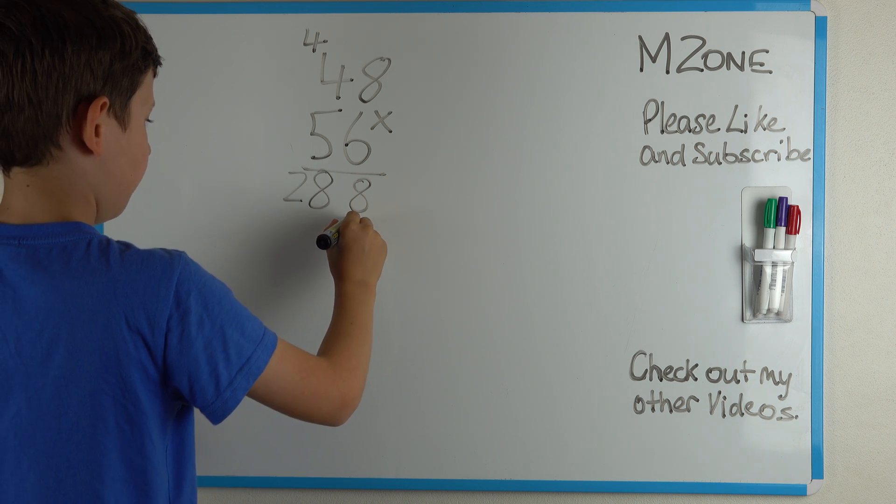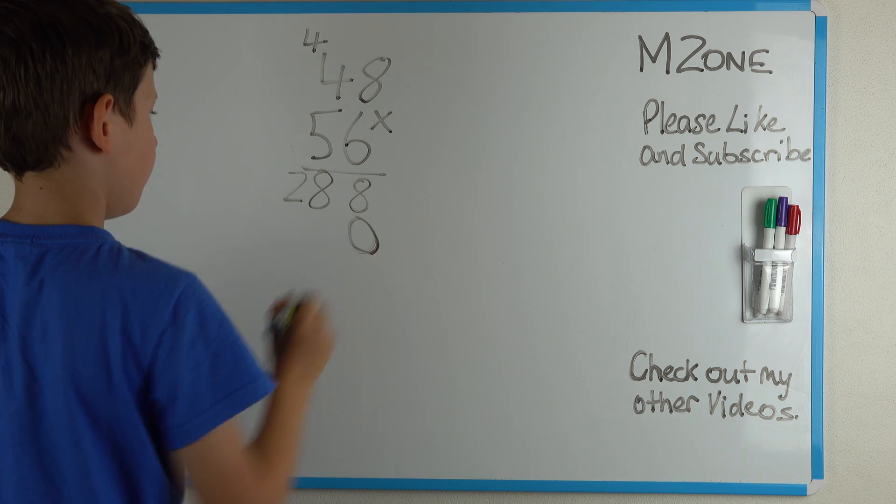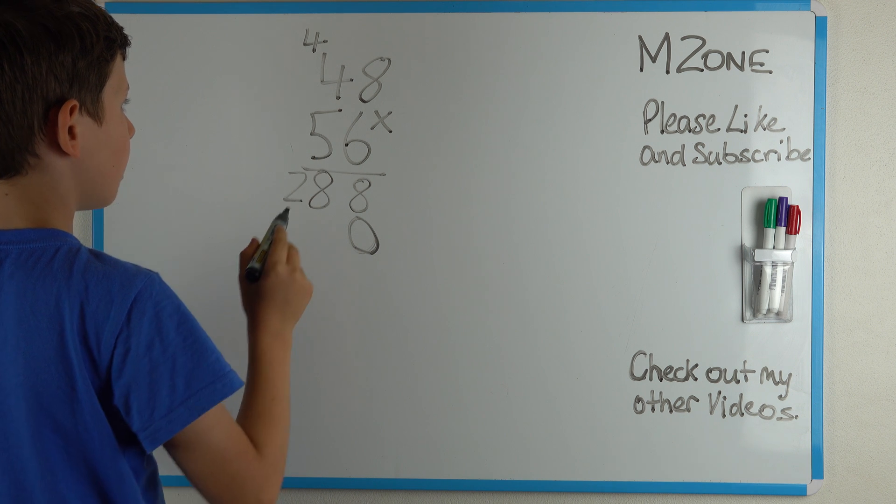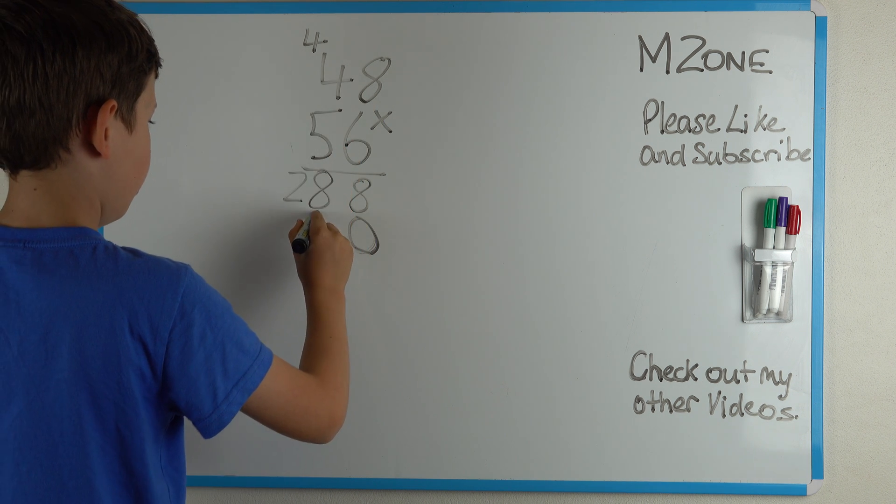Let's add this. Let's put the 0 here. Then we can start multiplying. 8 times 5 is 40.